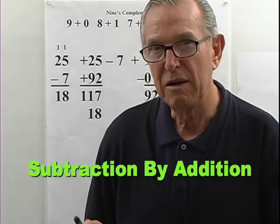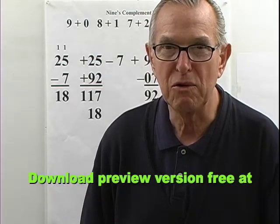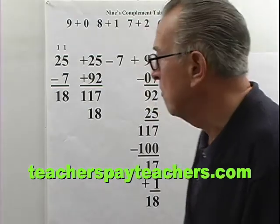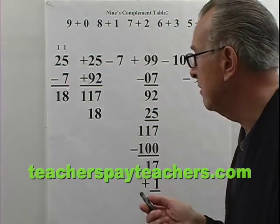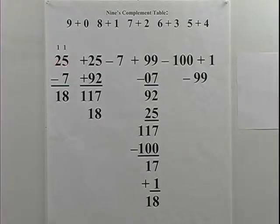We will modify our algorithm slightly so that it applies to all numbers. I will subtract from 25, 7. 7 is greater than 5 so I have to borrow 1 from that 2, that becomes a 1 and this becomes 15. 7 from 15 is 8, 0 from 1 is 1, so 25 minus 7 is 18.